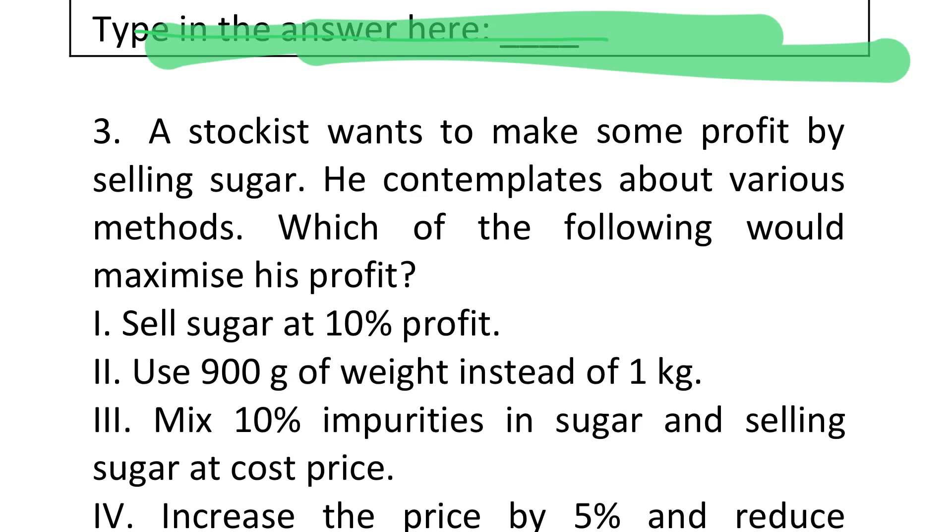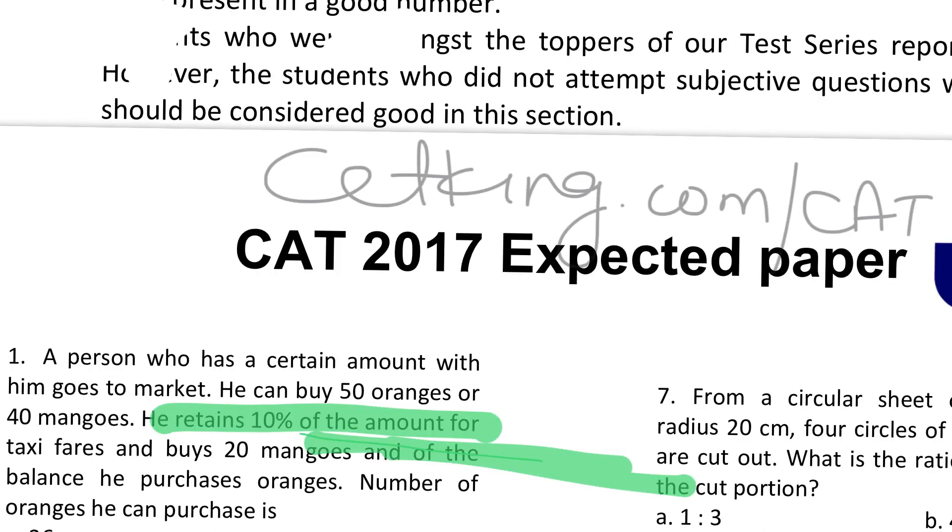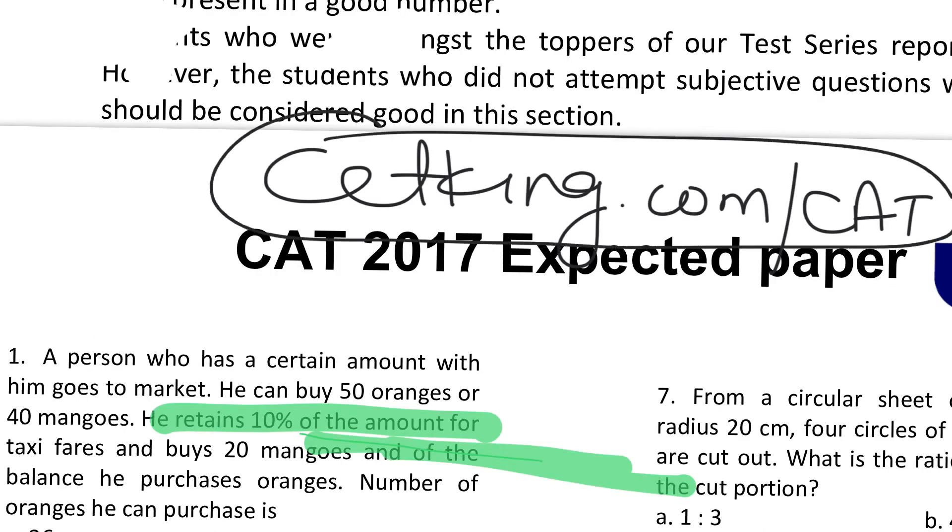Before we continue, you have to download this paper. Please download this expected paper for this year for the quant section so that you get an idea about what kind of questions you can expect. Also download the last year paper so that you know what came last year. Please download the paper on cetking.com/cat - the expected paper for this year and actual paper of last year.